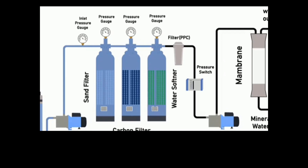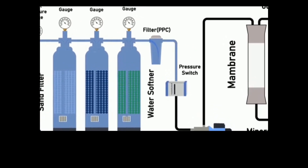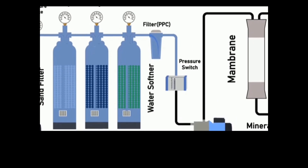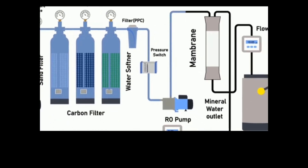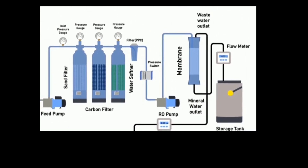Water then moves to the PPC filter to be purified. After the PPC filter, water goes to the pressure switch, which controls the water pressure to a certain level so that it can travel to the membrane. The switch gives a signal to the control panel, which starts the reverse osmosis pump. The reverse osmosis pump moves water through the membrane filter at high pressure and removes all dissolved substances from it. Mineral water comes from the bottom and raw water is collected from the top. Mineral water is then stored in the storage tank.